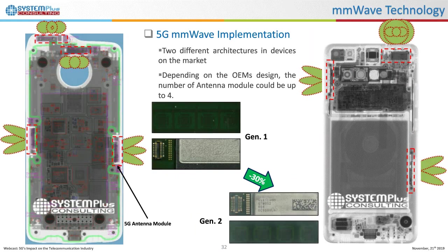Motorola and Samsung brought different solutions to market. In the Motorola Moto 5G, four antenna modules were integrated — two at the sides, one front, and one rear face. Infrared proximity sensors were integrated near the antenna modules to shut down those at proximity of a hand, avoiding unnecessary power consumption or radiation exposure. Samsung took a different approach, using two different generations of antenna modules where form factor was not the primary constraint, managing to be powerful enough with only three antenna modules.